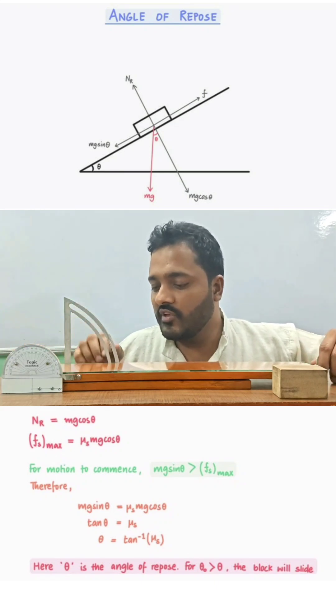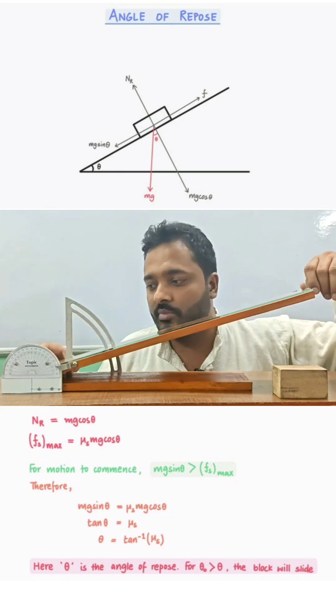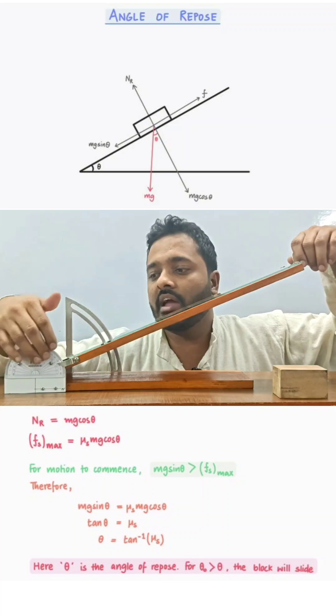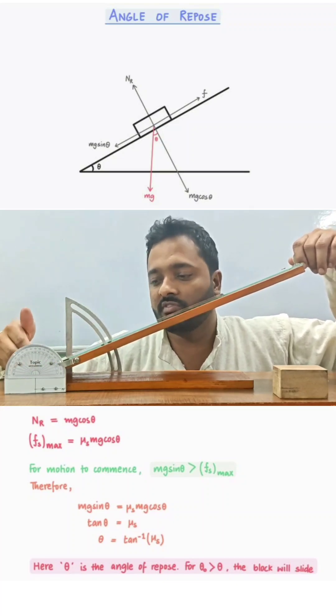Let's get started. We have an inclined plane arrangement with an angle measured using a protractor which is placed about this axis.